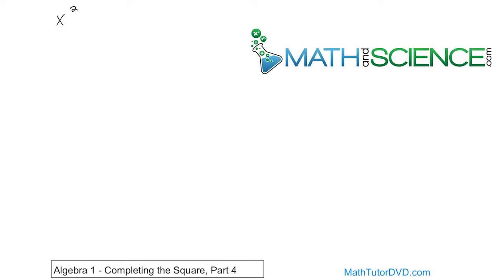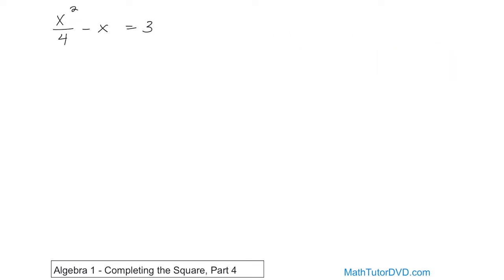First question: x squared over 4 minus x is equal to 3. The first thing you want to do is find the x squared term and check if there's a coefficient in front of it. In this case there is — there's a one fourth in front. We want to clear that, so we need to figure out a way to do that.